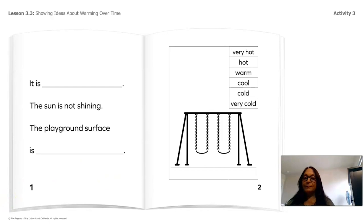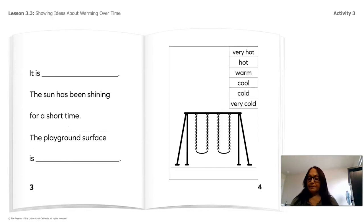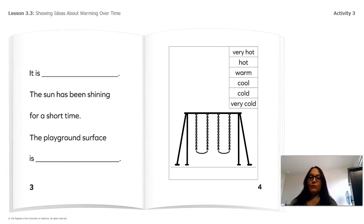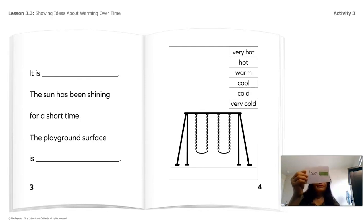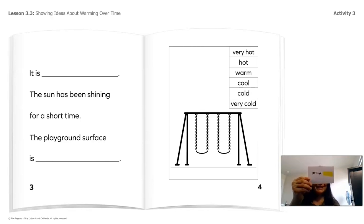Let's try another one. 'It is blank. The sun has been shining for a short time. The playground surface is blank.' Think about the colors and the thermometer. The answer: it is cool, and the playground surface is warm. That is correct!